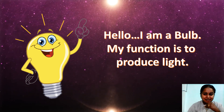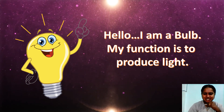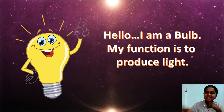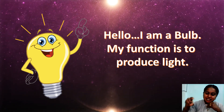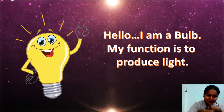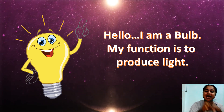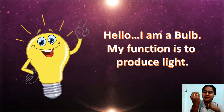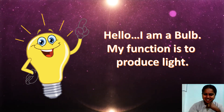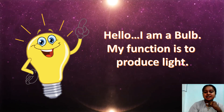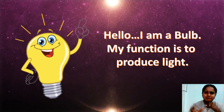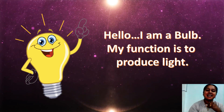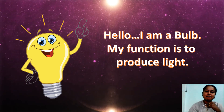I am a bulb. My function is to produce light. Once the dry cell gives the energy, the current will flow, and the bulb will light up. So the bulb produces light. When you're in a dark area and you switch on the light, the whole area becomes bright.